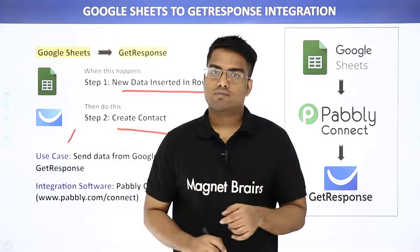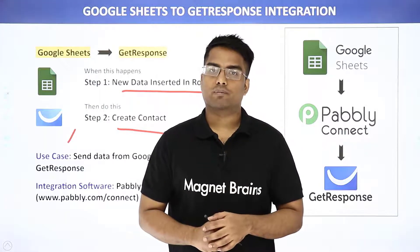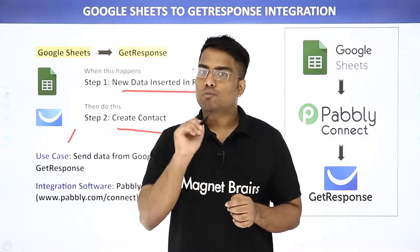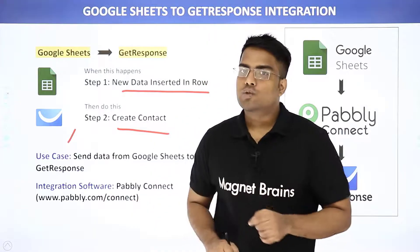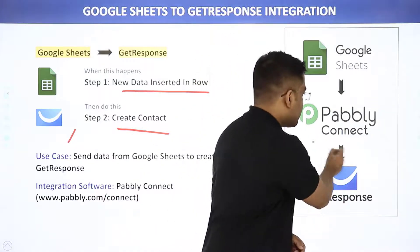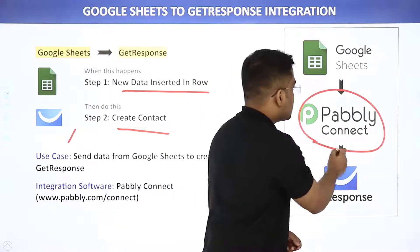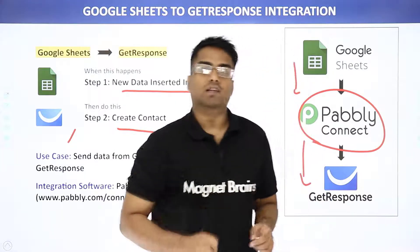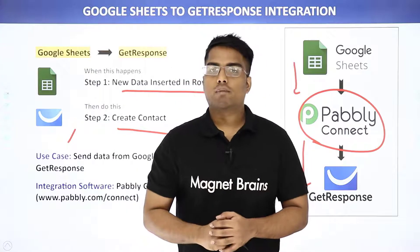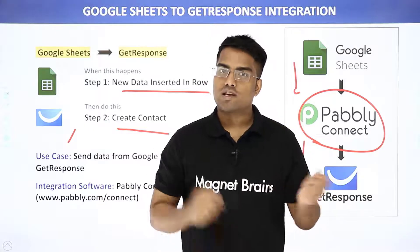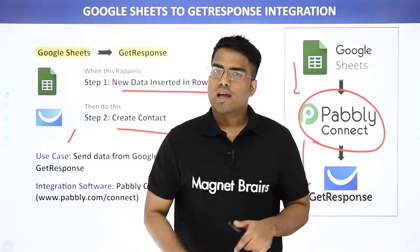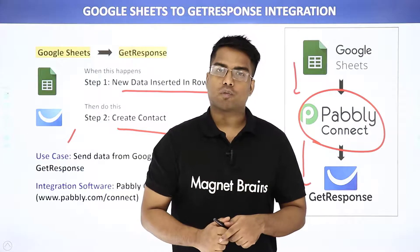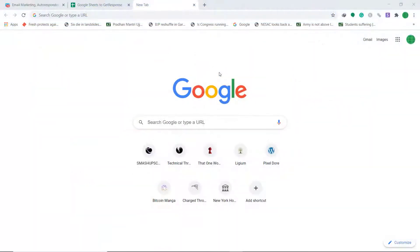There is one minor problem — Google Sheet and GetResponse are two different applications, hence there is no data flow between them. In cases like these we need to bring a third app to connect them both. In this video we will use Pabbly Connect to integrate Google Sheets and GetResponse, and the best part is there is no need for coding skills or programming. It can be done in two easy steps.